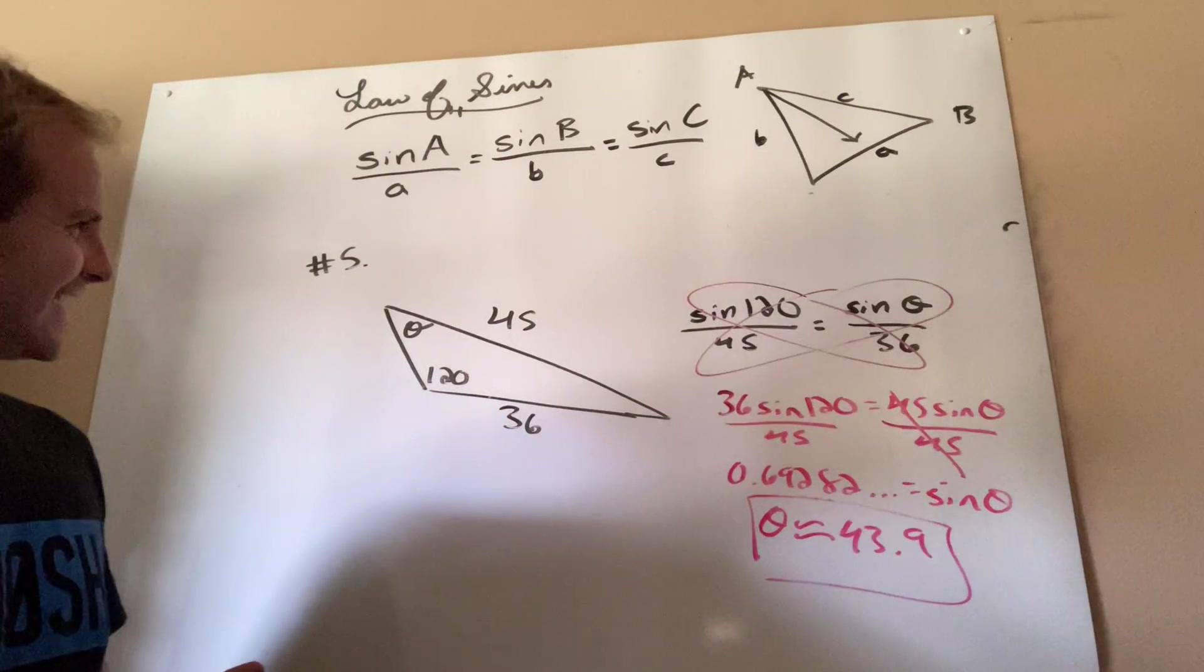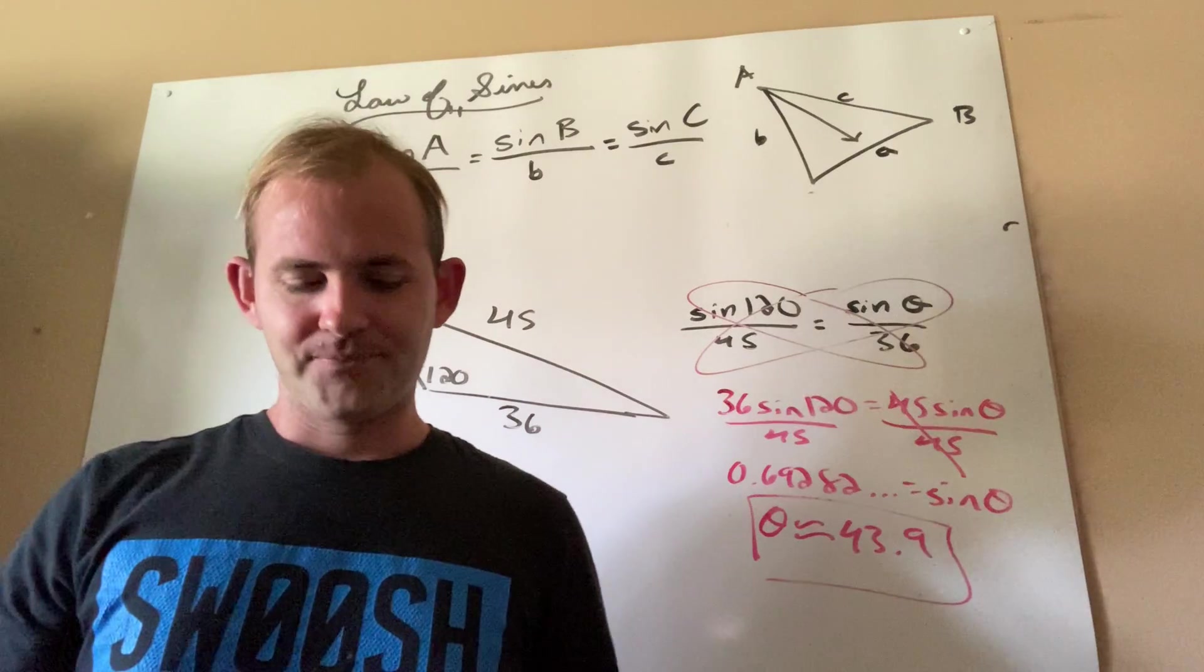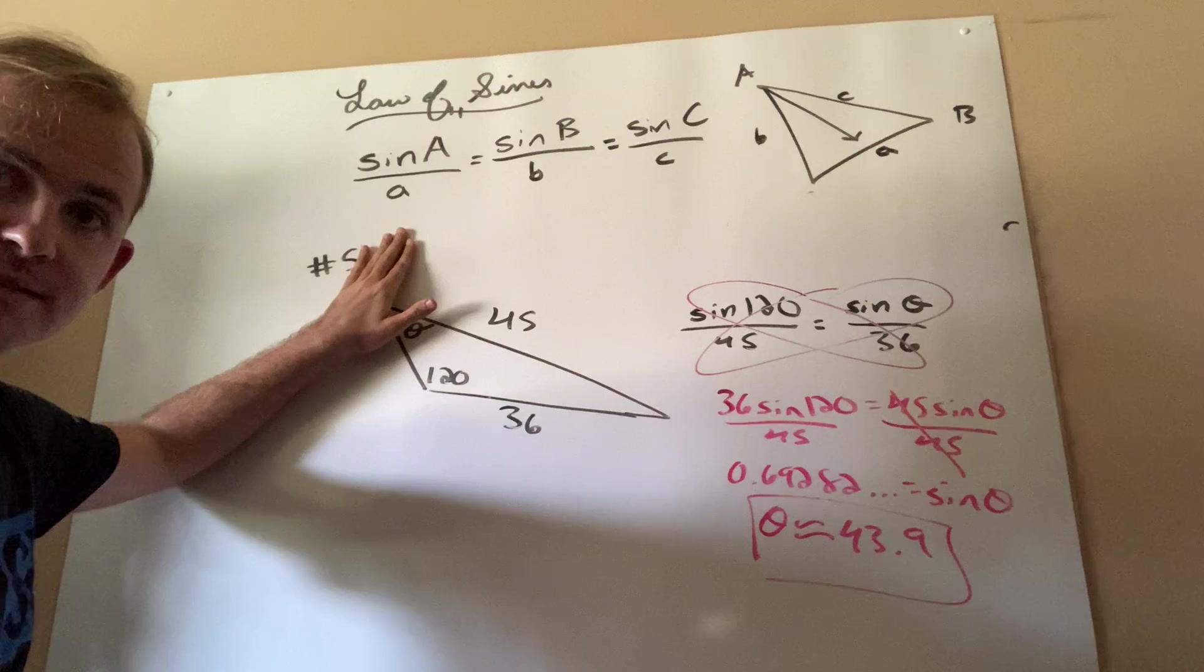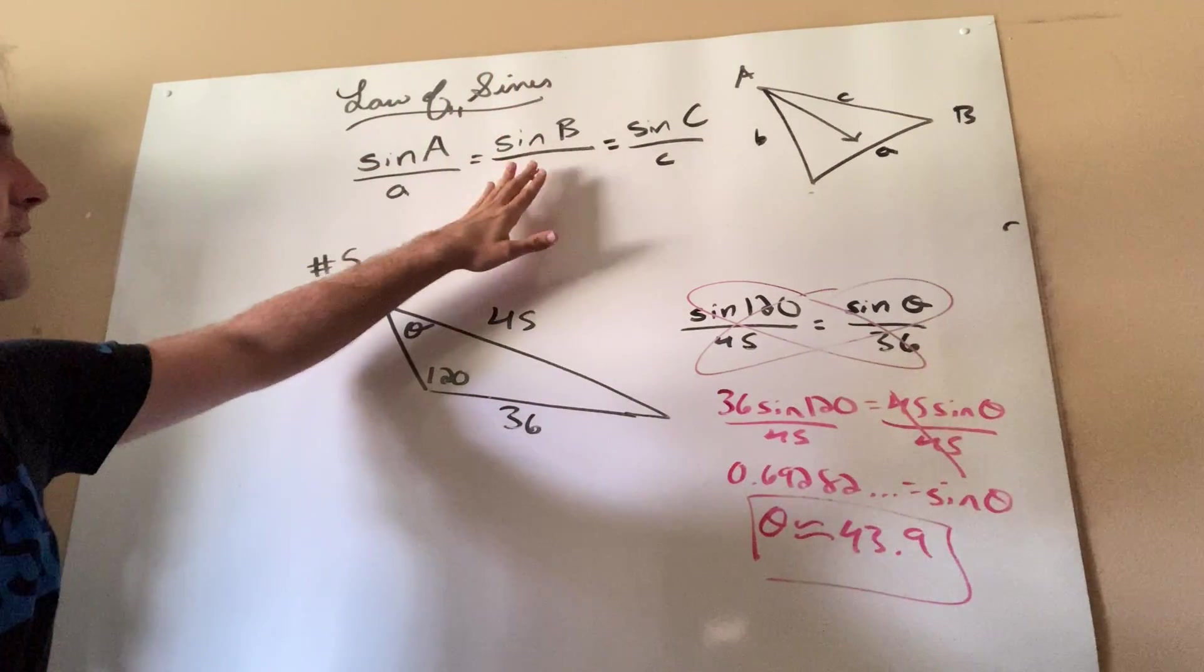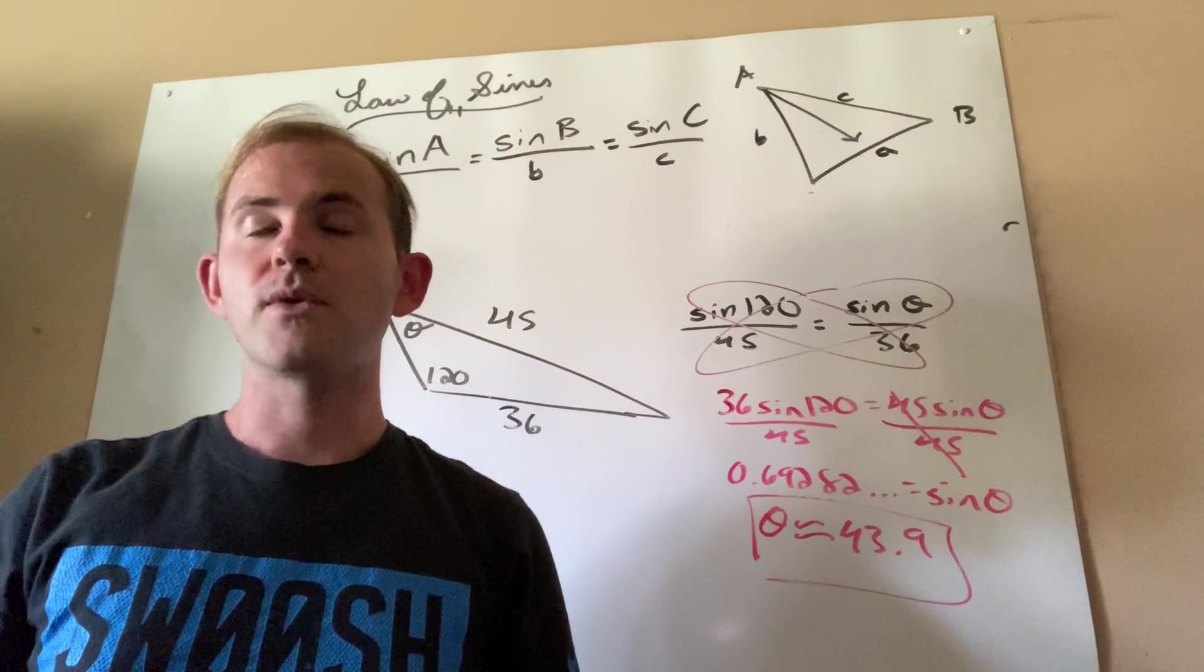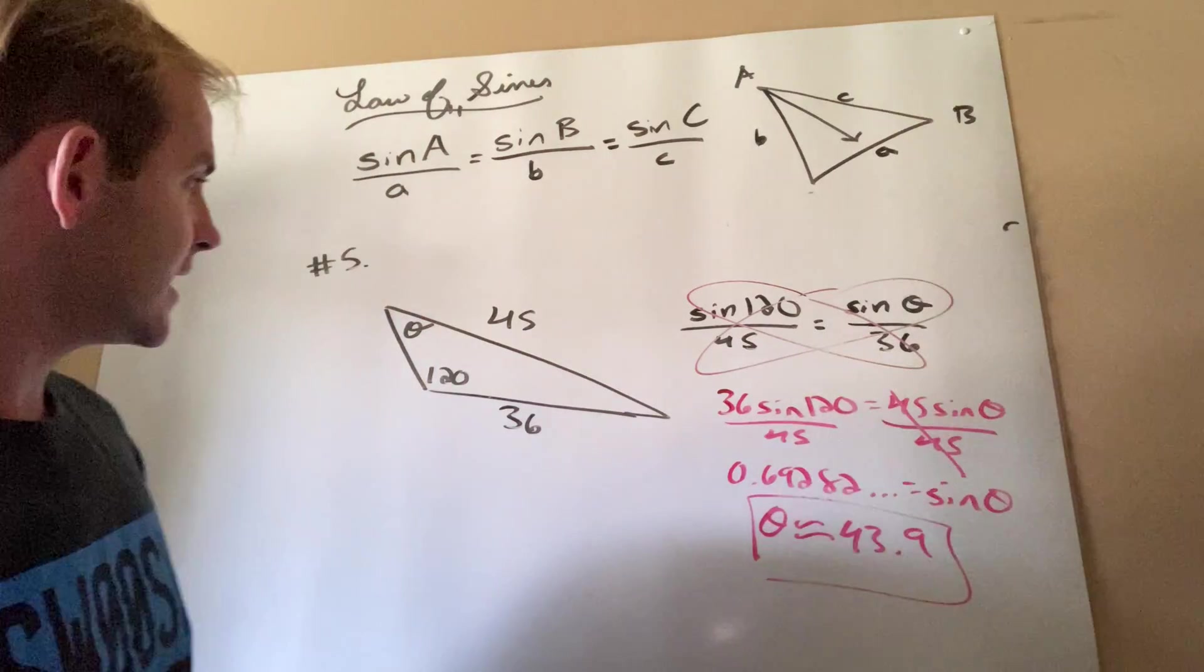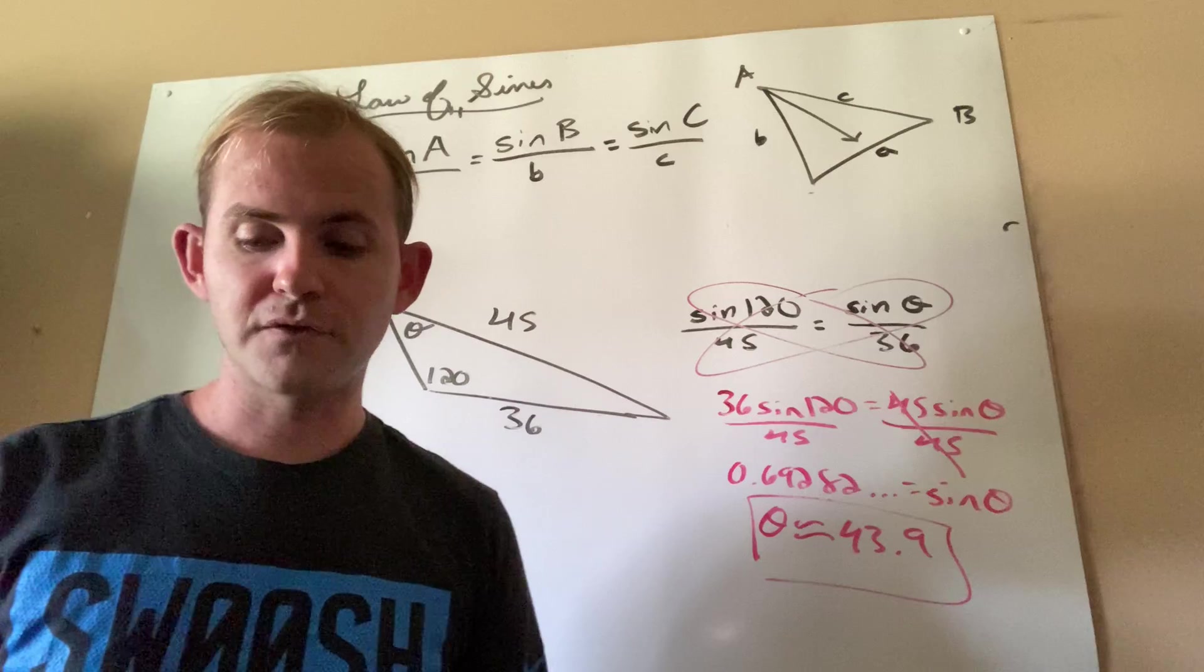Kind of weird, but it works. So let's sum it up. The law of sines says that the sine of an angle divided by the side that it's across from equals the sine of another angle divided by the side it's across from. In order to use it, we must have at least one angle side pair, meaning an angle and the side that's across from it.